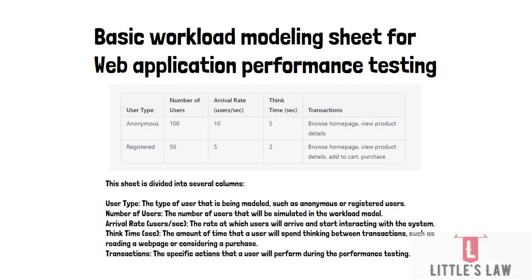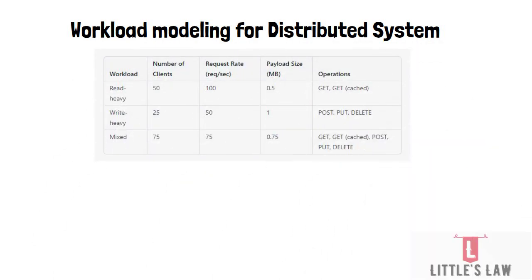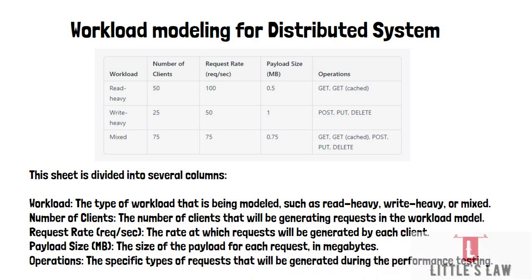For a distributed system workload model, we have three workloads. Read-heavy: 50 users, 100 requests per second, 0.5 MB payload, operations: GET and GET cached. Write-heavy: 25 clients, 50 requests per second, 1 MB payload, operations: POST, PUT, and DELETE. Mixed workload: 75 clients, 75 requests per second, 0.75 MB payload, operations: GET, POST, PUT, and DELETE.